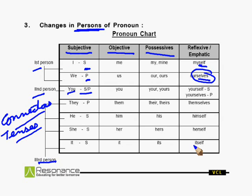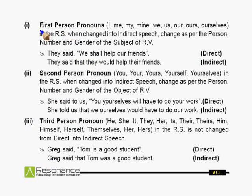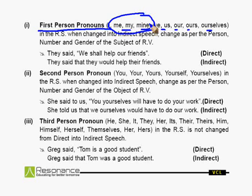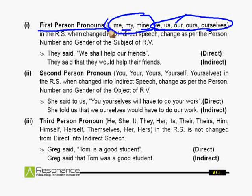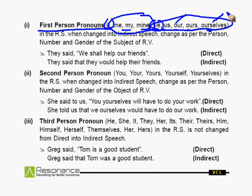With the help of this chart, changing persons becomes extremely easy. First person pronouns are: 'I', 'me', 'my', 'mine' — subjective, objective, possessive, and reflexive 'myself'. And then 'we', 'us', 'our', 'ours', and 'ourselves' — again first person, with reflexive case 'ourselves'.